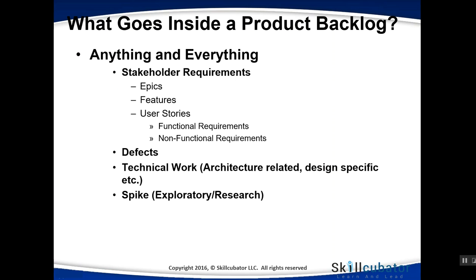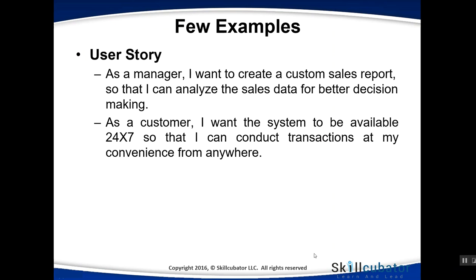The last type of backlog item is a spike — exploratory or research-oriented work where the team is unaware of how something will work and needs to invest time to learn about it. For example, a user story looks like: 'As a manager, I want to create a custom sales report so that I can analyze the sales data for better decision making.' This is a story written from a user perspective as a functional requirement in plain English, complemented by acceptance criteria.